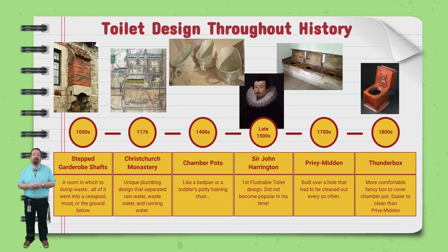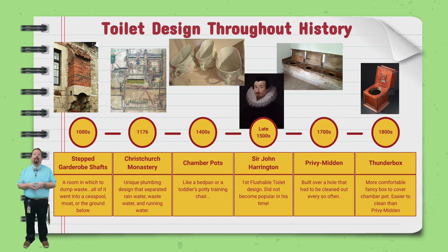In the late 1500s, Sir John Harrington created the first flushable toilet design, but it didn't take off and it was several years before it was actually used. In the 1700s, when our country was being founded, they used a privy midden — basically a wooden bench with holes in it that dropped waste into a hole in the ground. That hole had to be emptied every so often, kind of like a modern-day porta potty or an outhouse.